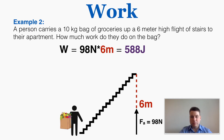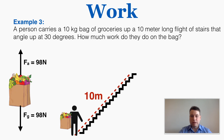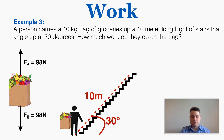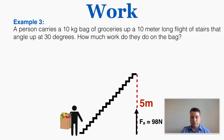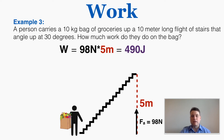One more quick example: the same situation, but now we're given the full length of the stairs as 10 meters and the angle of the stairs at 30 degrees, with the same force applied to the same bag. We need to find the horizontal and vertical displacements using trig. The vertical displacement is 5 meters. The horizontal component is perpendicular to the force, so it doesn't contribute to work. With 5 meters up and 98 Newtons, the work is 98 times 5 equals 490 joules.